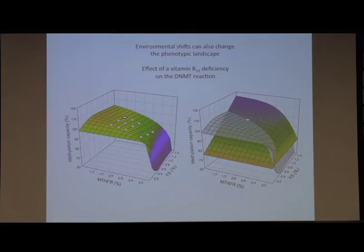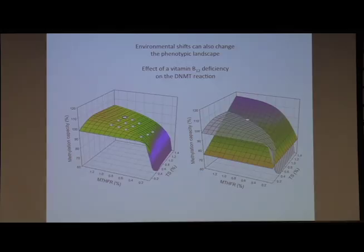Here's another effect. If we give this model a vitamin B12 deficiency, we're looking at DNA methylation capacity. There are the polymorphisms — that same landscape again. We give it a vitamin B12 deficiency, the landscape tilts, and now all of a sudden these previously fairly neutral polymorphisms become very large at the phenotypic level.